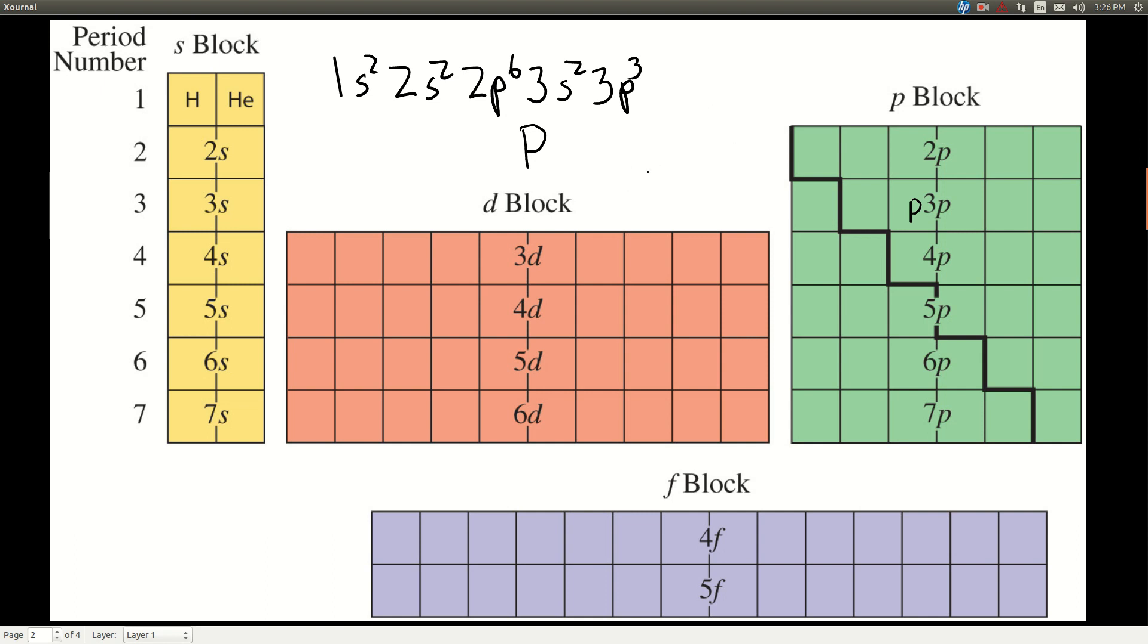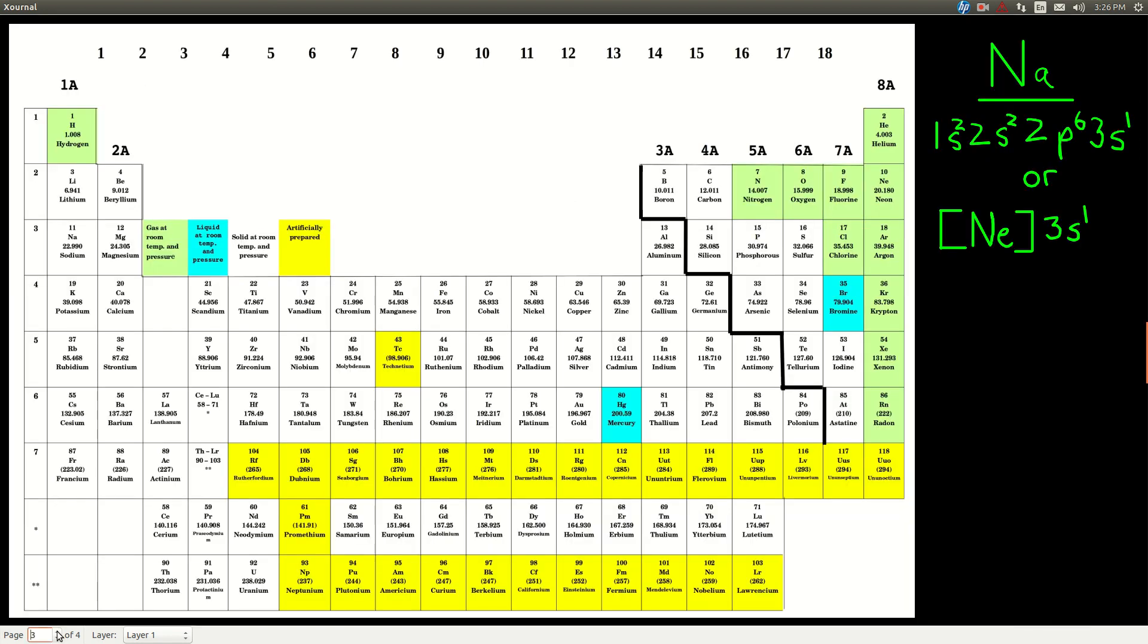so we could say, also, neon, square brackets, and then we just have to do everything after neon, which would be 3S2, 3P3, so let's do a couple more.